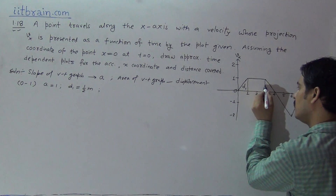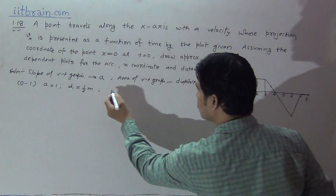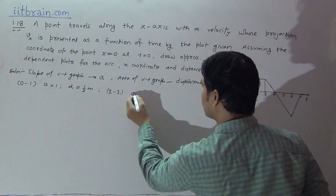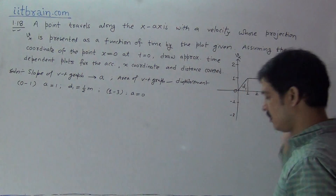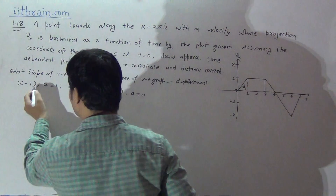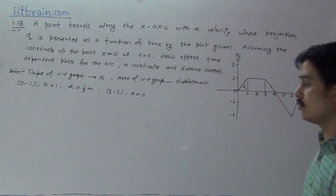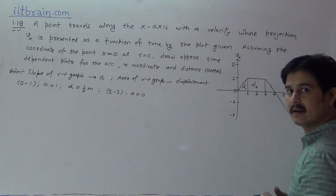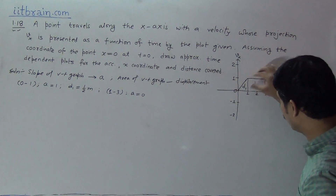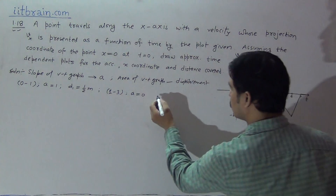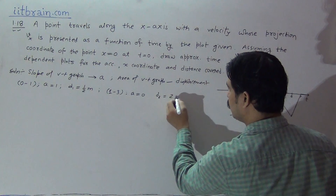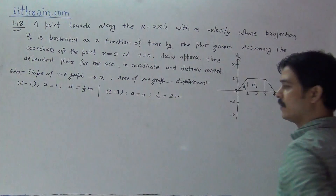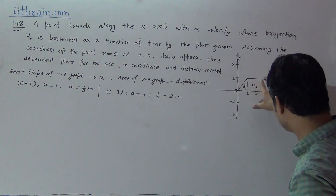From 1 to 3 seconds, acceleration equals 0 because the graph is parallel to the x-axis, so the slope is 0. The displacement in this interval is the area of the rectangle: base times height equals 2 × 1, so displacement D2 equals 2 meters. In this second part, acceleration is 0 and displacement is 2 meters.